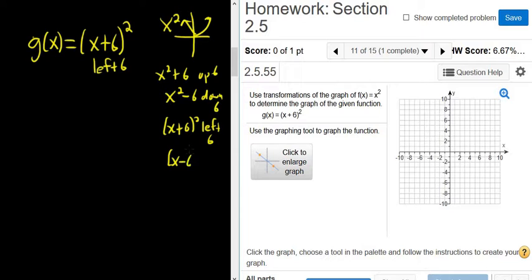So if it had been x minus 6 parentheses squared, in this case, it would be right 6. Okay, so we're taking this graph, and we're shifting it left 6.